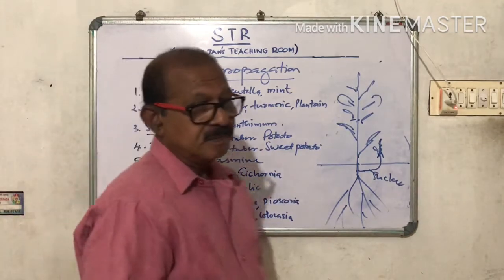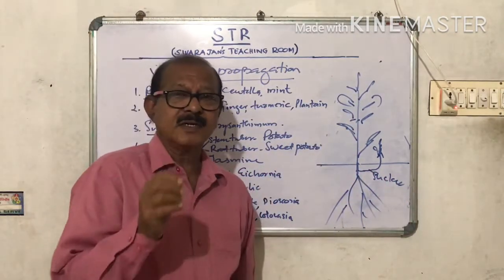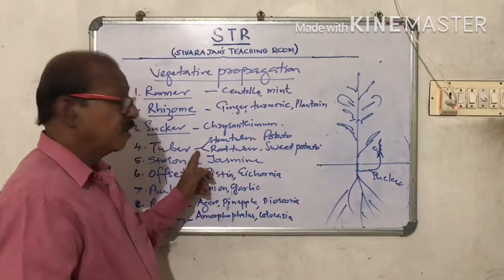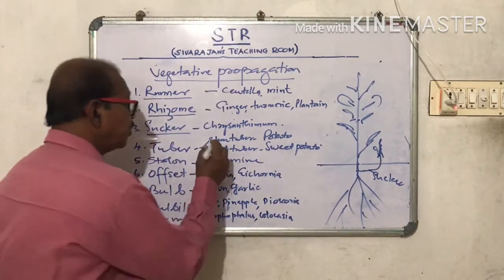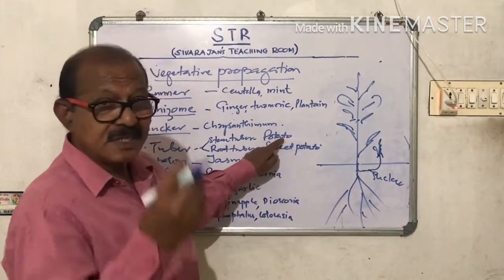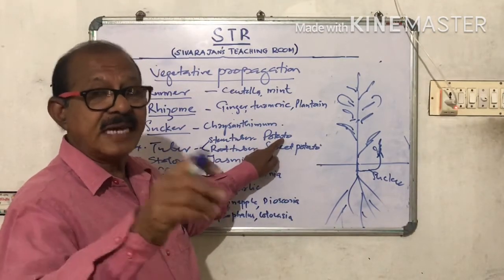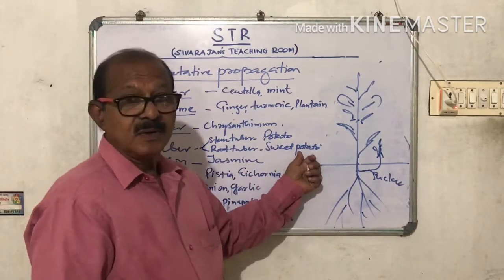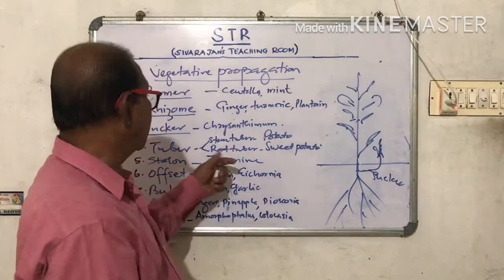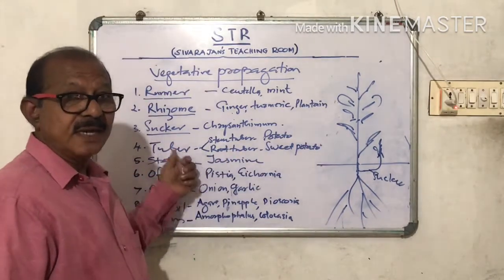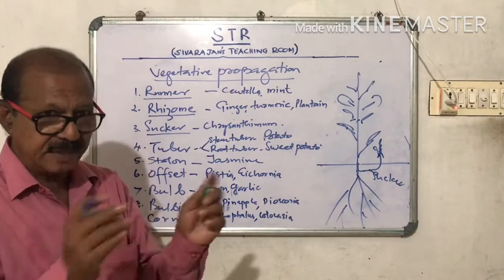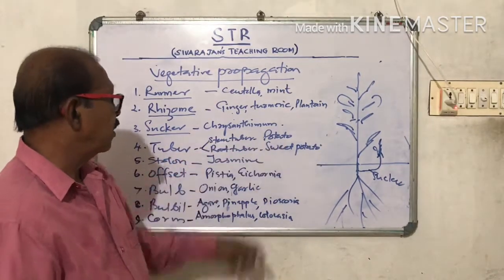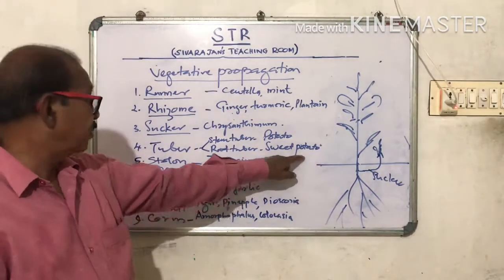The Tuber. What is a Tuber? A Tuber is a part that stores food and becomes enlarged, and that helps in propagation. For example, stem tuber — in the case of Potato, the underground stem stores food and helps in propagation. In the case of Sweet Potato, it is the root that stores food, so it is called a root tuber. A Tuber is a part of the plant which stores food and enlarges — it can be stem (stem tuber, e.g., Potato) or root (root tuber, e.g., Sweet Potato).